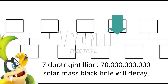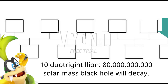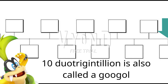7 Duotrigentillion: a 70 billion solar mass black hole will decay. 8 Duotrigentillion: a 75 billion solar mass black hole will decay. 10 Duotrigentillion: an 80 billion solar mass black hole will decay. And 10 Duotrigentillion is also called a googol — that's one followed by 100 zeros. Moving on.